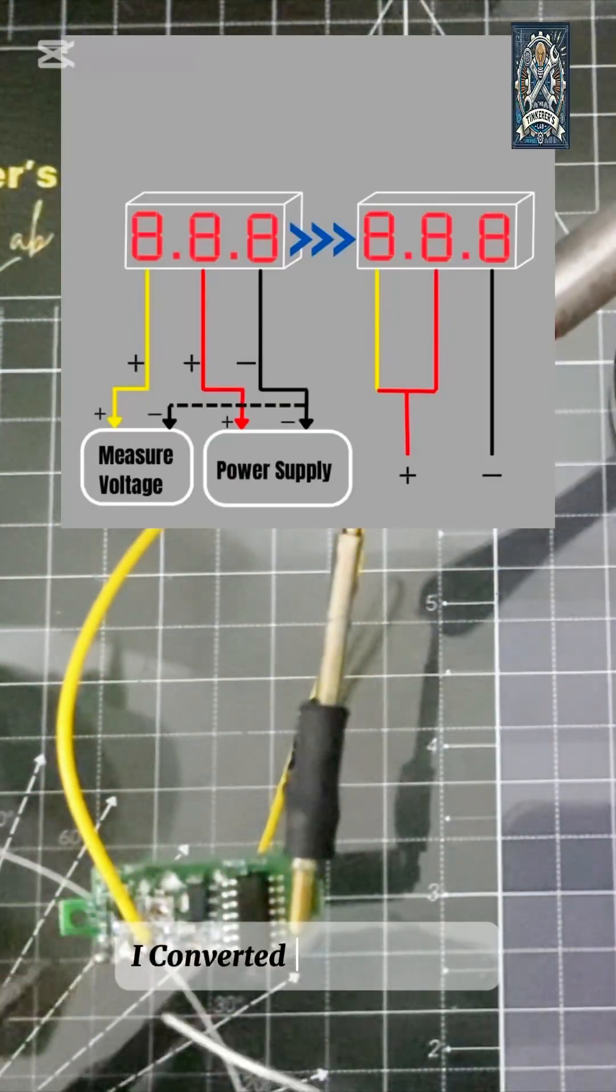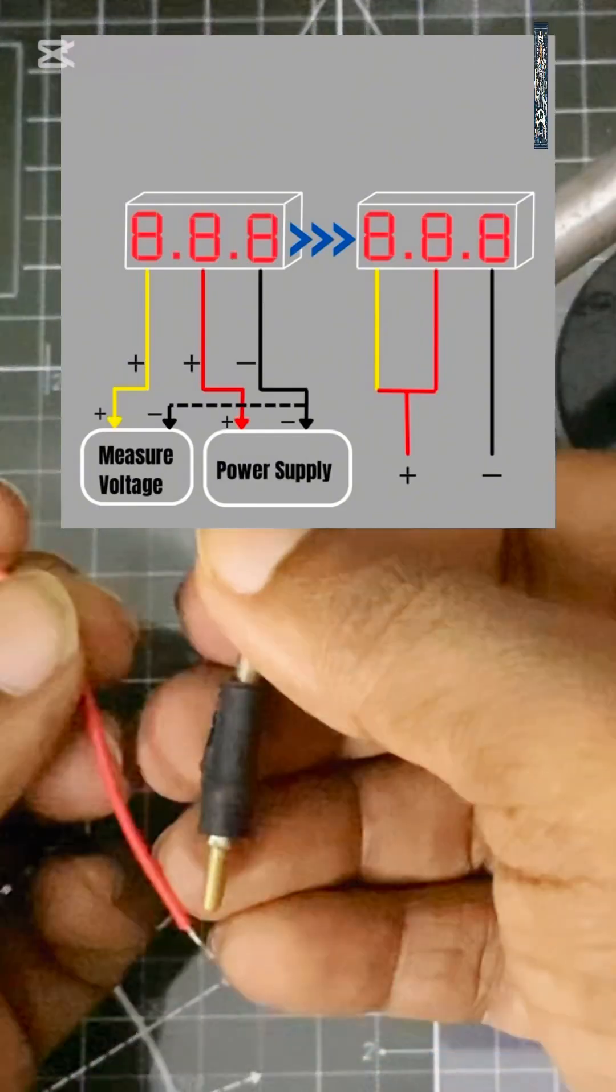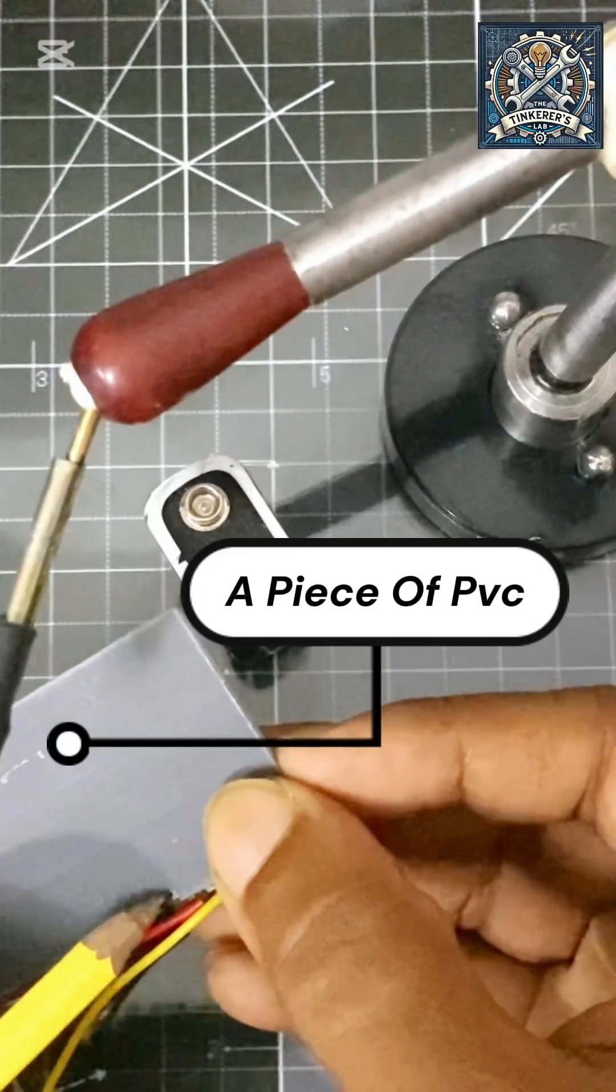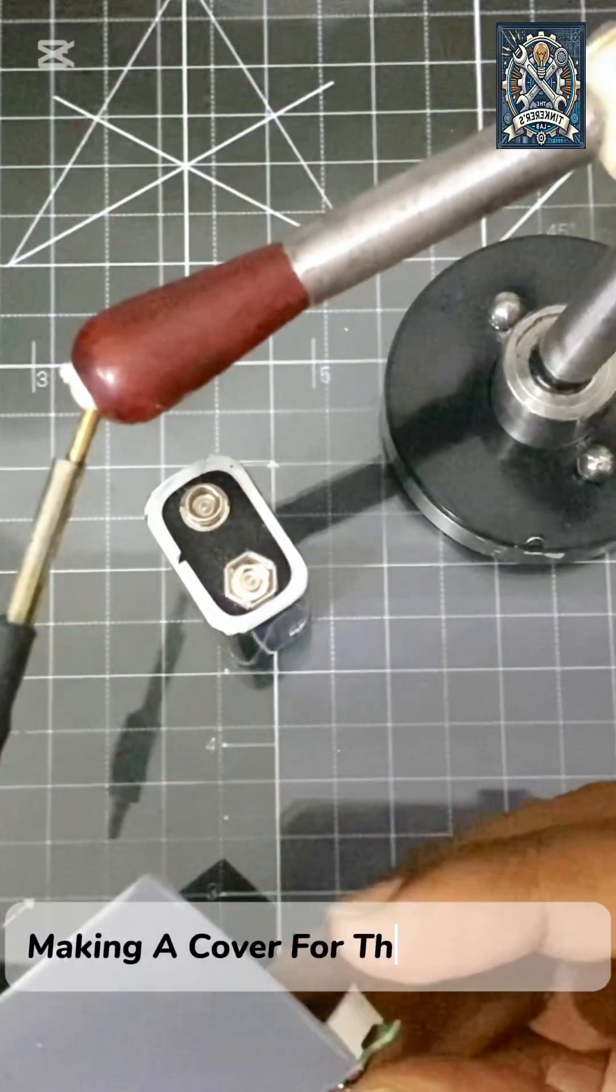I converted to two wires, a piece of PVC, making a cover for the voltmeter.